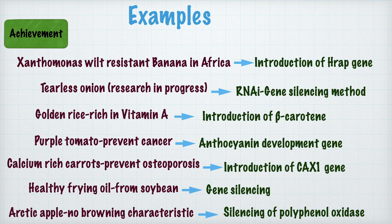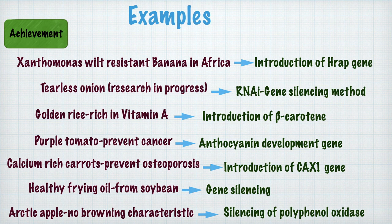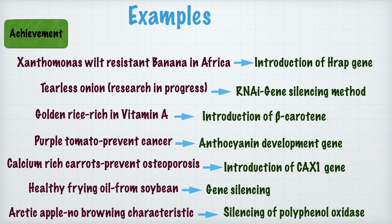Another example is golden rice, a genetically modified rice variety which is rich in vitamin A, helping to prevent vitamin A deficiency-related problems in humans while also providing a carbohydrate source. It is a good food combination for people who have rice as their main staple food. Its success came through the introduction of beta-carotene into the rice variety.